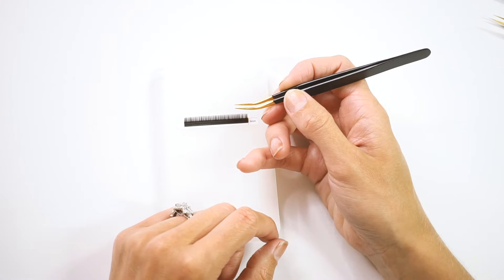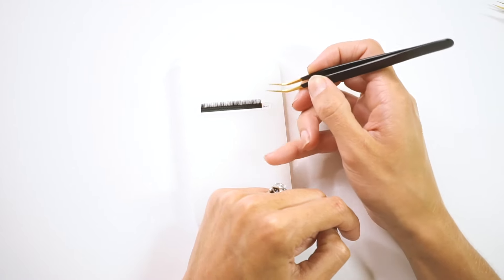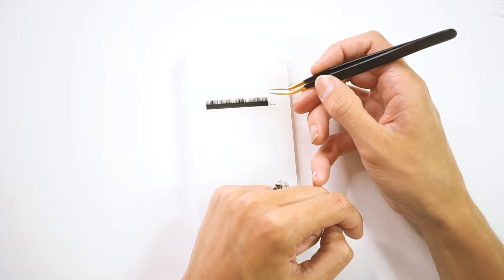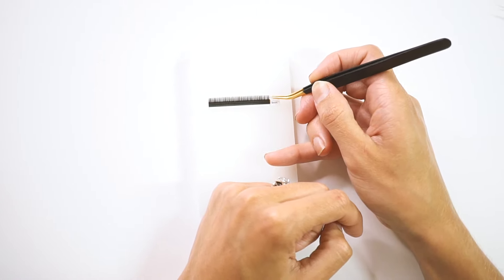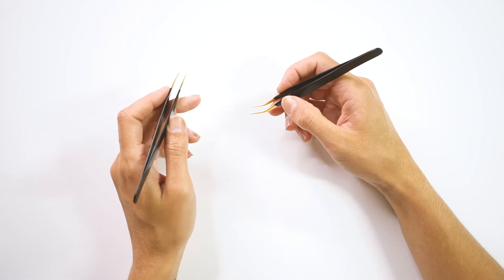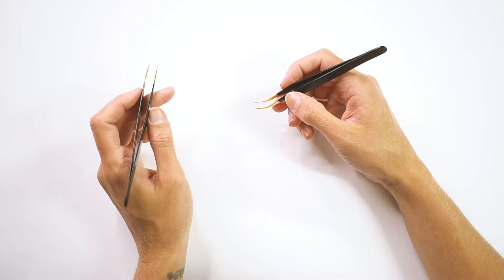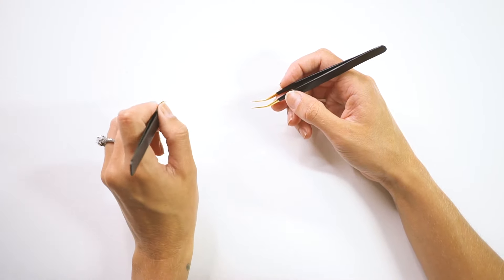Now when I'm picking up the lash, my middle finger is almost always either under or on, normally under the tweezers. This offers me even more support. So let's point out the subtle differences here. When I'm isolating, my hand should look something like this, or this. By the way, I almost always tilt my tweezers a little bit when I'm isolating.